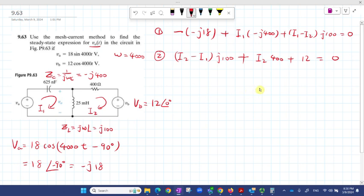Then we can start to simplify it. Moving this one to the other end, it becomes -j18. For I1, I got -j400, plus j100, so it will be -j300 I1. And I got I2, which is negative, so minus j100 I2. That's the simplified version for equation one.